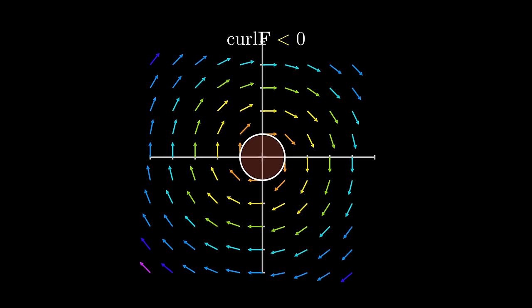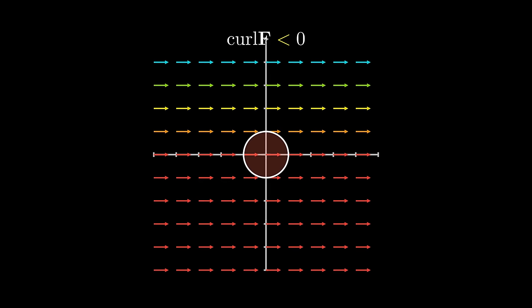Non-zero curl doesn't always occur in vector fields that look like circles. For example, we have a region with higher magnitude vectors on the top and lower magnitude vectors on the bottom. This results in an overall clockwise rotation, which is negative curl.